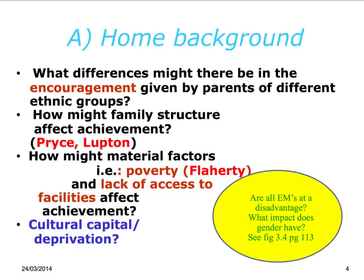This also links to the material factors that can affect how well a student does, particularly poverty. Have a look at what Flackertie said about the impact of poverty on the achievement of certain ethnic minority groups and a lack of access to certain facilities — how does that affect achievement?